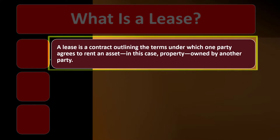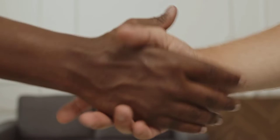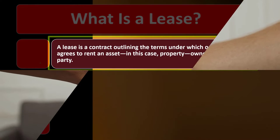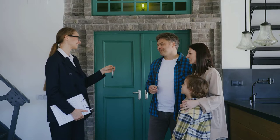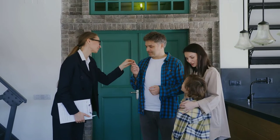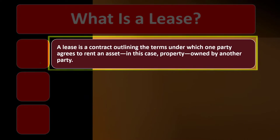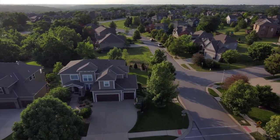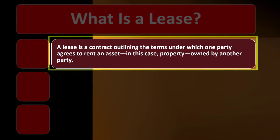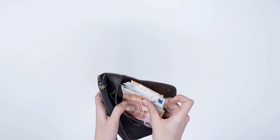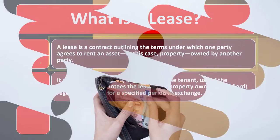What is a lease? A lease is a contract outlining the terms under which one party agrees to rent an asset — in this case, property — owned by another party. We've got a contractual agreement, typically in writing, with at least two people or entities involved. The person renting the apartment and paying the lease payments is called the lessee. The party that owns the property and collects the rent payment is the lessor.